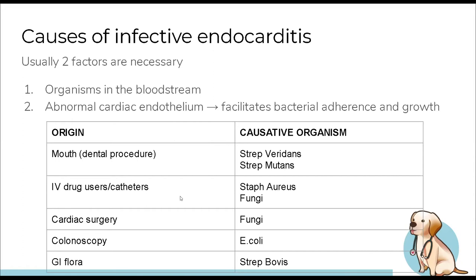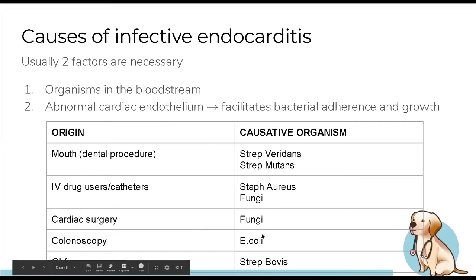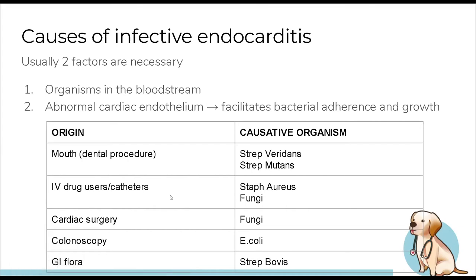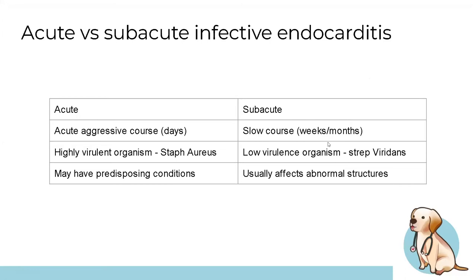In IV drug users, Staph aureus is the most common causative organism — it's found on skin and enters the bloodstream via injection, then reaches the heart. Cardiac surgery tends to involve fungal causes. Colonoscopy is associated with E. coli, which is resident gut bacteria. Strep bovis is another GI flora organism. Remember: dental procedure = Strep viridans/mutans; IV drug user = Staph aureus (also tricuspid valve); cardiac surgery = fungi.